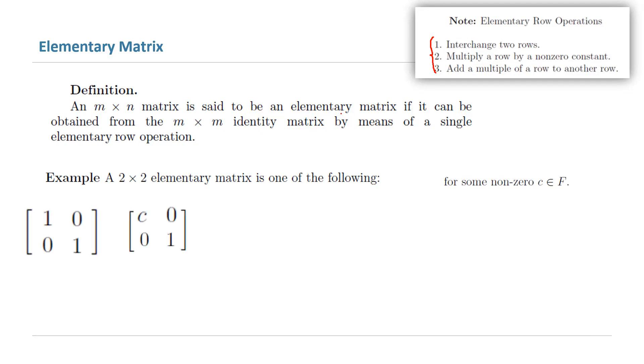You can multiply the first row by C, and it creates a new matrix, which is called an elementary matrix.